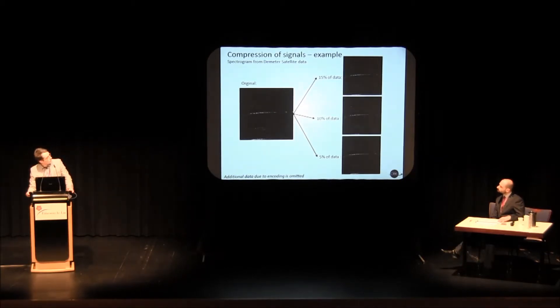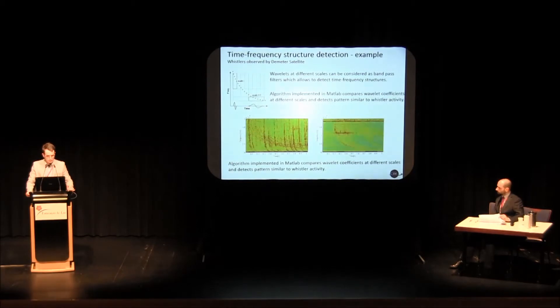The second example is the spectrogram from the DEMETER satellite. The original picture shows the spectrogram containing some whistler activity. Whistlers are the waves occurring on one side of the earth during the thunderstorm and propagating along the magnetic line to the other half of the earth. If we take a look at the right pictures, where we have 15, 10 and 5% of data, we see that the results are quite satisfying.